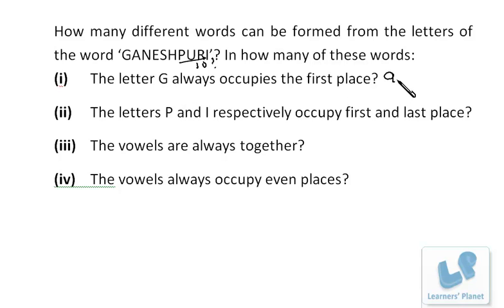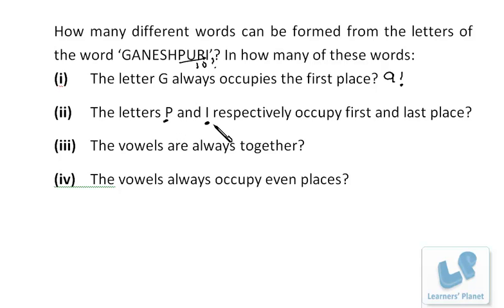The third condition: the letters P and I respectively occupy the first and last place. We have ten places — for the first place P is fixed, for the last place I is fixed — so we are left with eight places. We have to arrange eight letters, so they can be arranged in 8! ways. So till here, the answers are 10!, 9!, and 8! — these problems were straightforward.